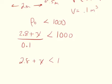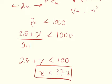If I multiply both sides by 0.1, I get 2.8 plus x less than 100. Subtracting 2.8, x is less than 97.2 kilograms. So when the additional mass is less than 97.2 kilograms, this mattress will continue to float. Anything beyond 97.2 additional kilograms will cause this object to sink. The book rounds to 97.